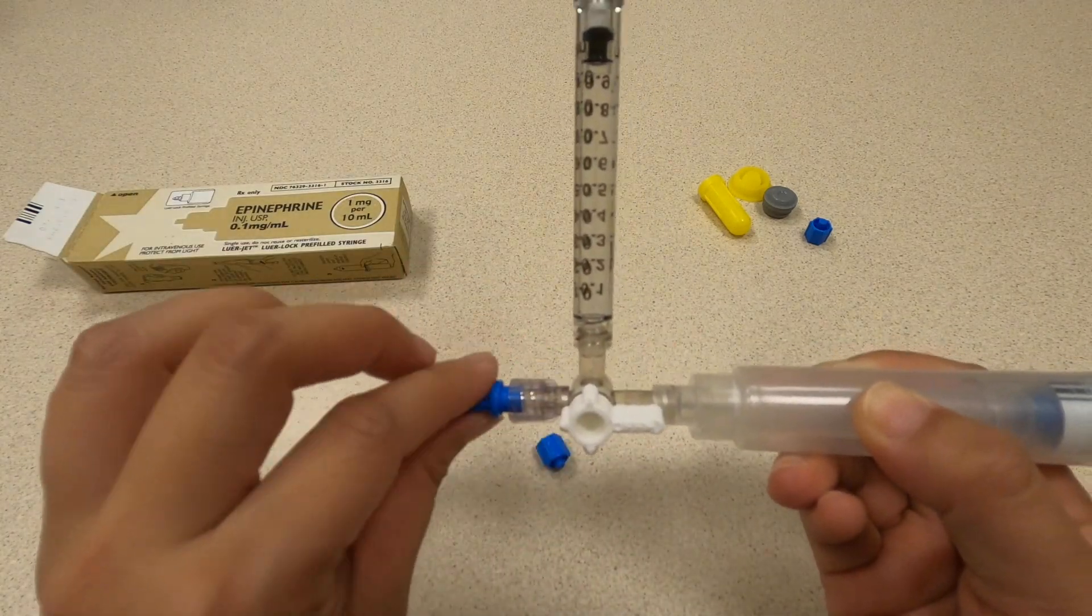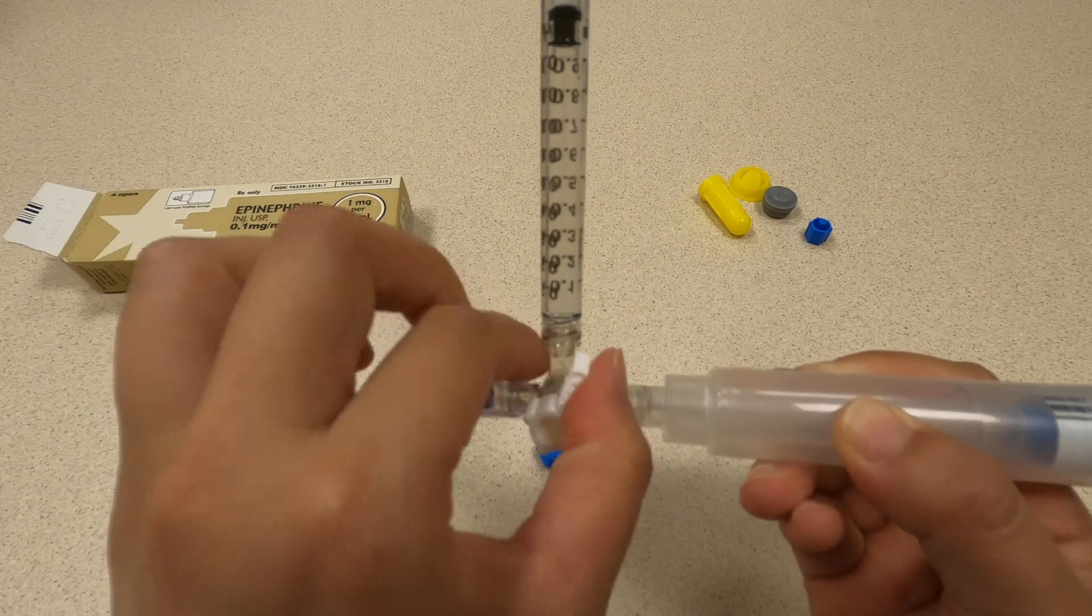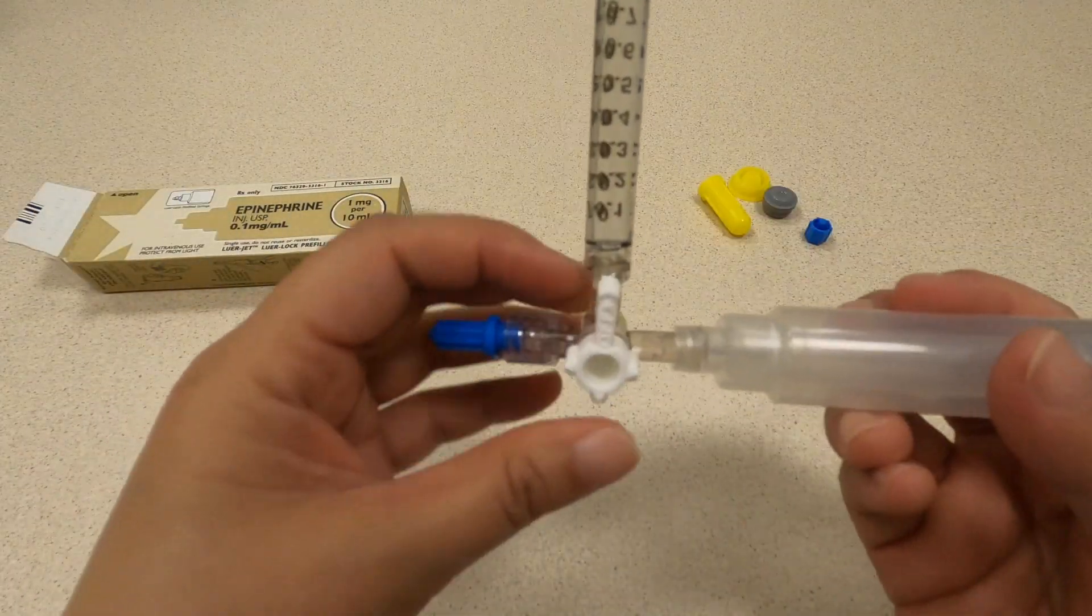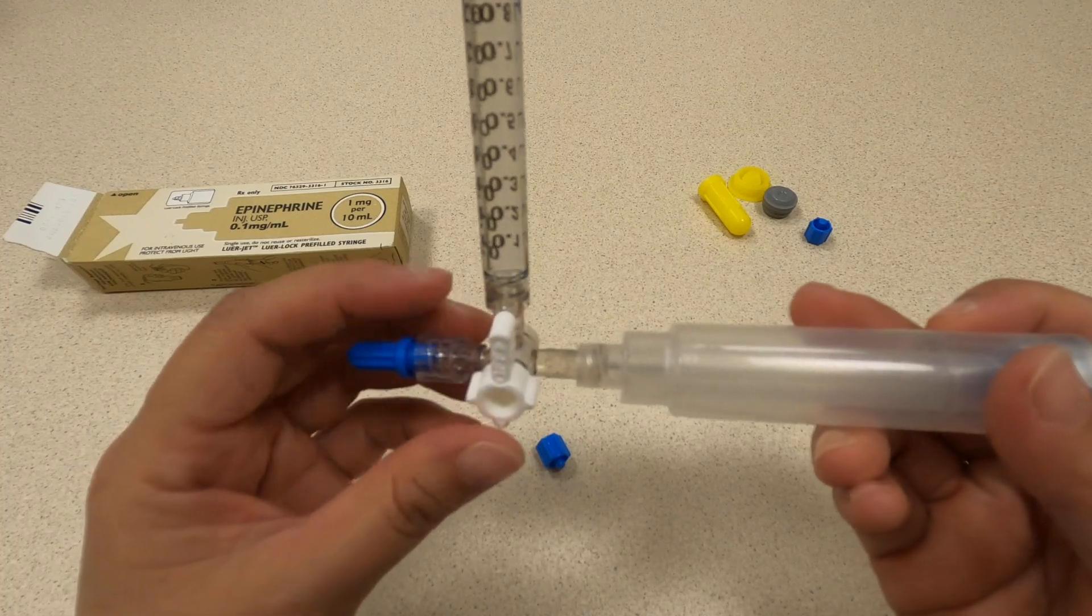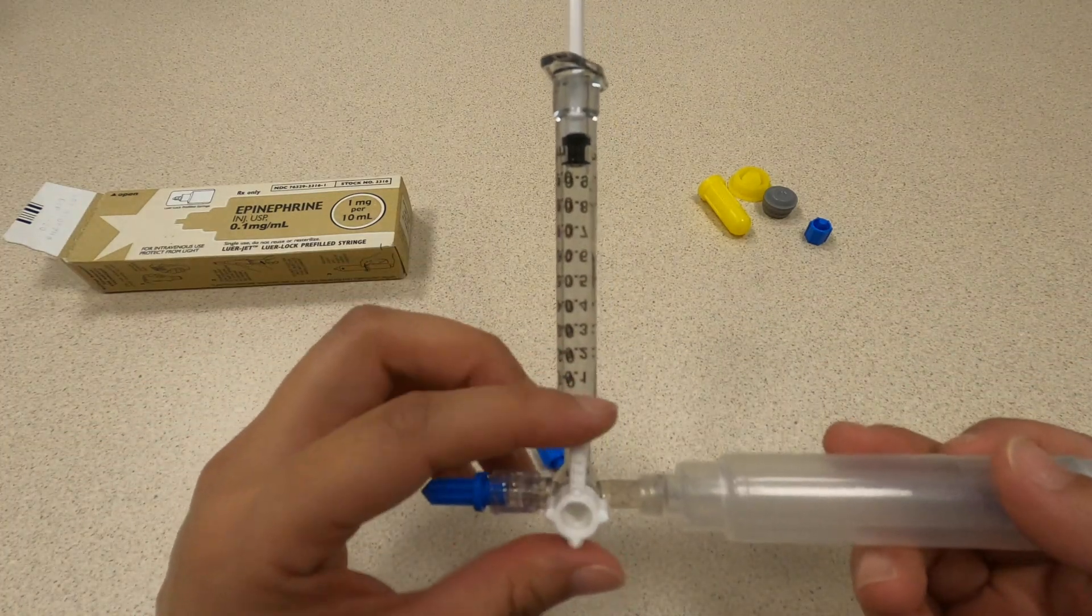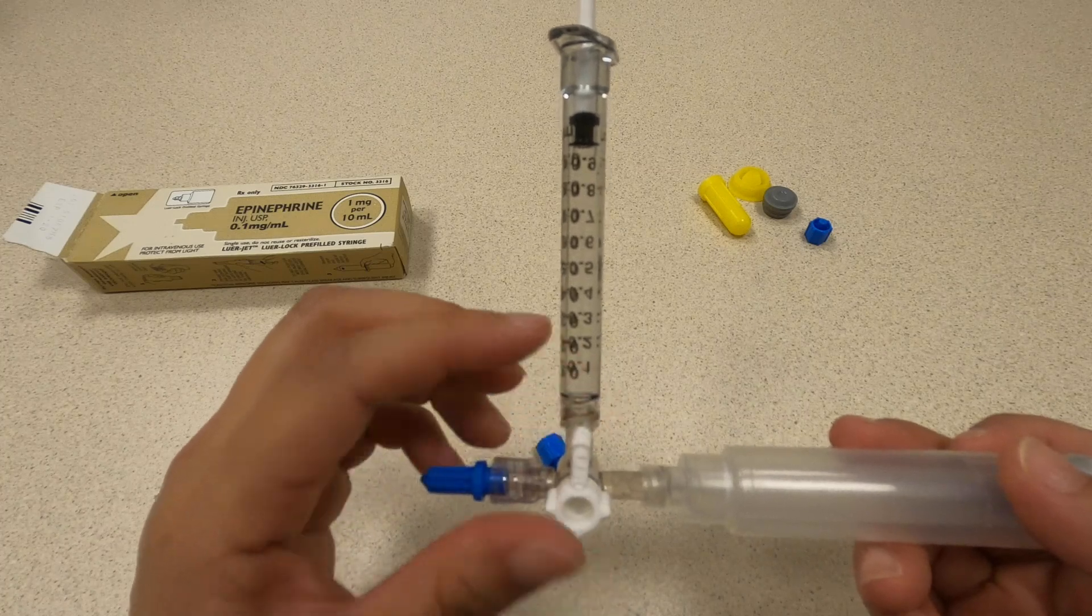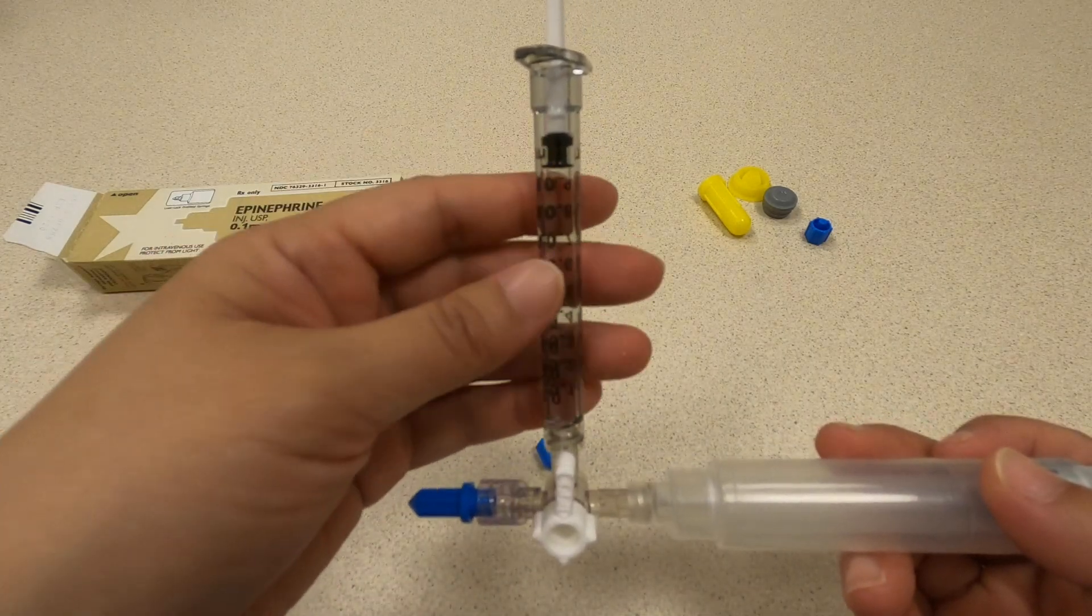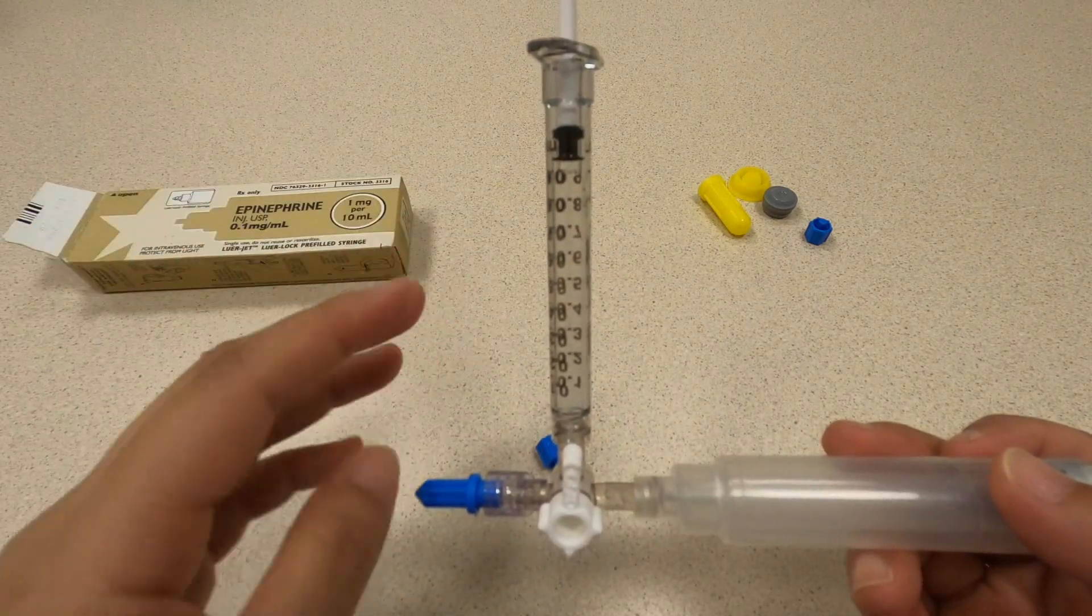The problem with this is that if you don't have a lot of experience using stopcocks, you could accidentally push on this and then all of a sudden you've given the entire ampule to a very small child. I would only recommend that if you are very comfortable with the stopcock. Otherwise I would use this method to draw up the dose and then take it off and give it to the patient.